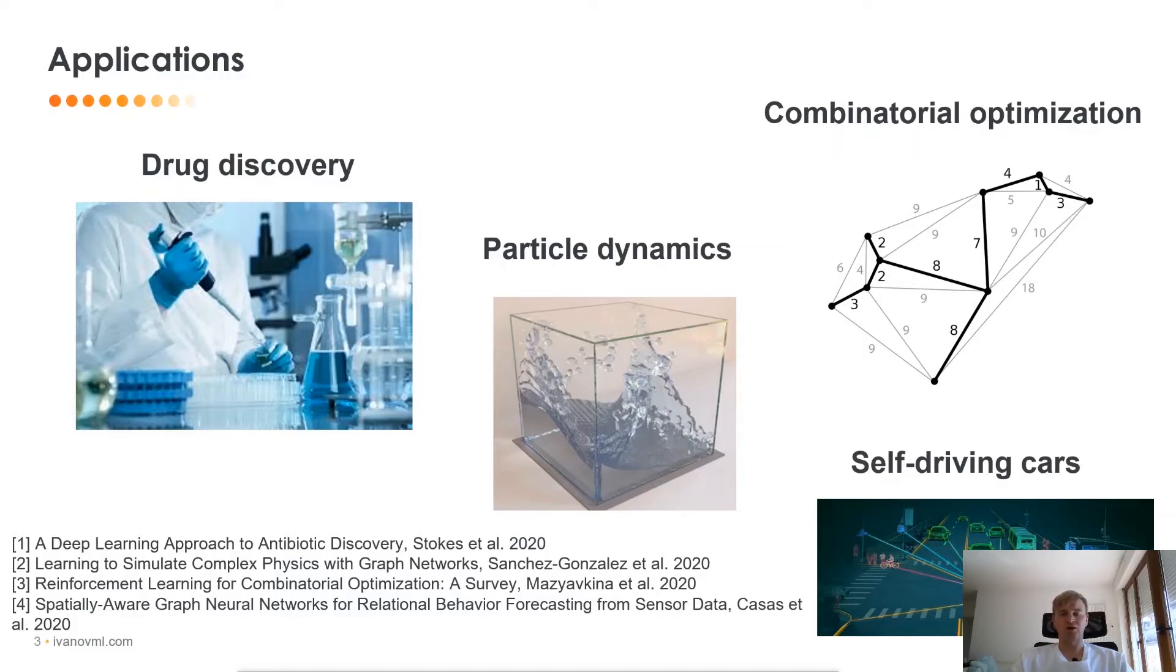You can apply GNN to predict the dynamics of particles, for example, the particles of water. You can also apply GNN together with state-of-the-art solvers that solve combinatorial optimization problems such as TSP or MaxCut. And finally, we can use GNN to predict the behavior or dynamics of pedestrians and other cars for autonomous driving.